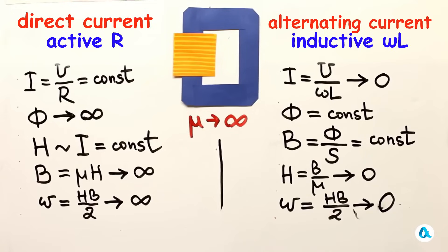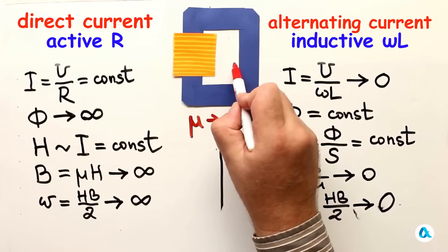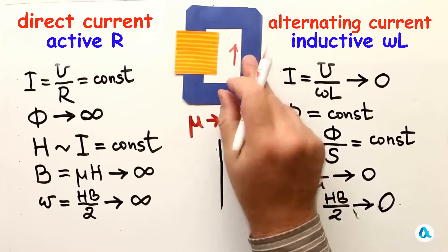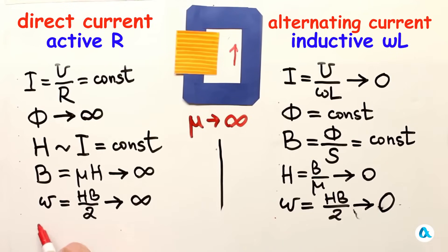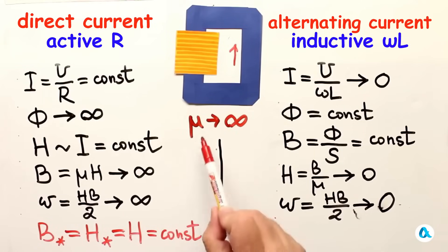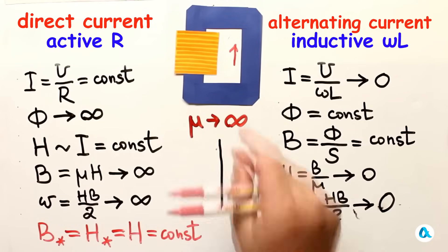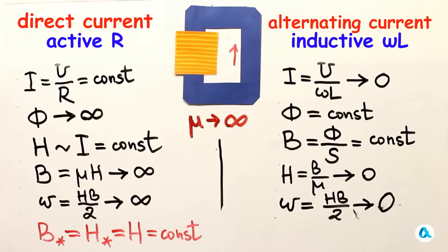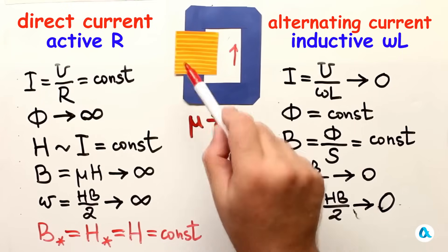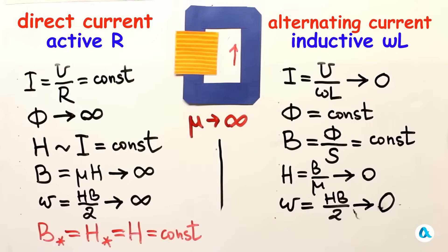We just need to write down what interests us specifically for our problem, namely, what the magnetic field will be that emerges from the core. I will denote it with the letter B with a star. Outside we have mu equals one, so B with a star and H with a star are the same. And H with a star will be essentially the same as H inside the core. That is, it will be a constant value. And this means that when we let mu approach infinity, the magnetic field that emerges remains the same, essentially the field that the coil creates inside itself in the absence of a core.